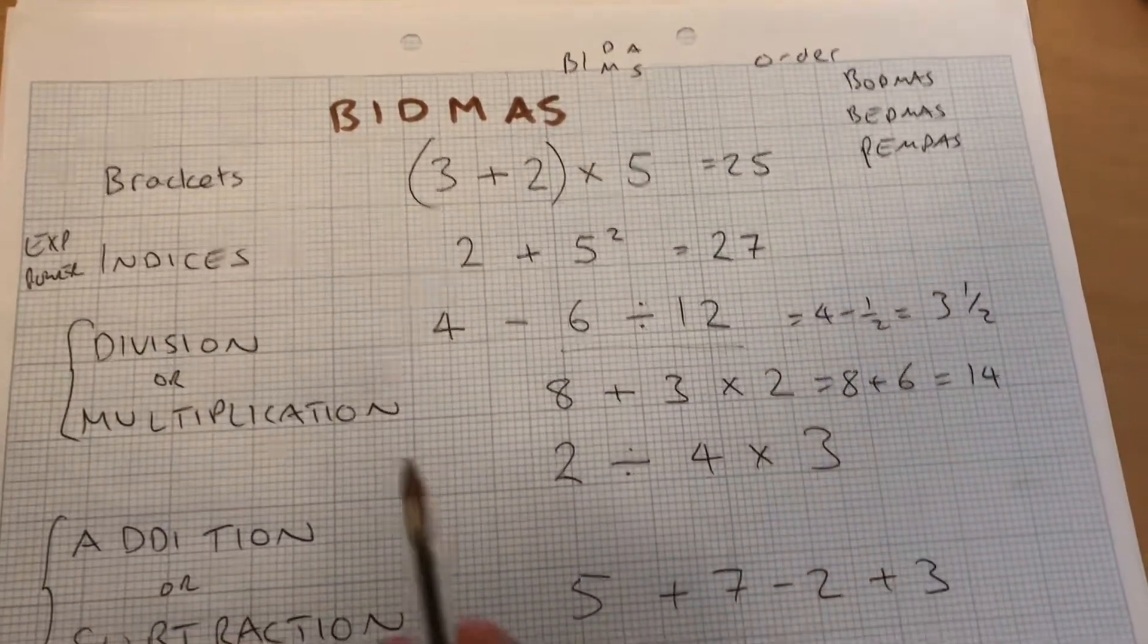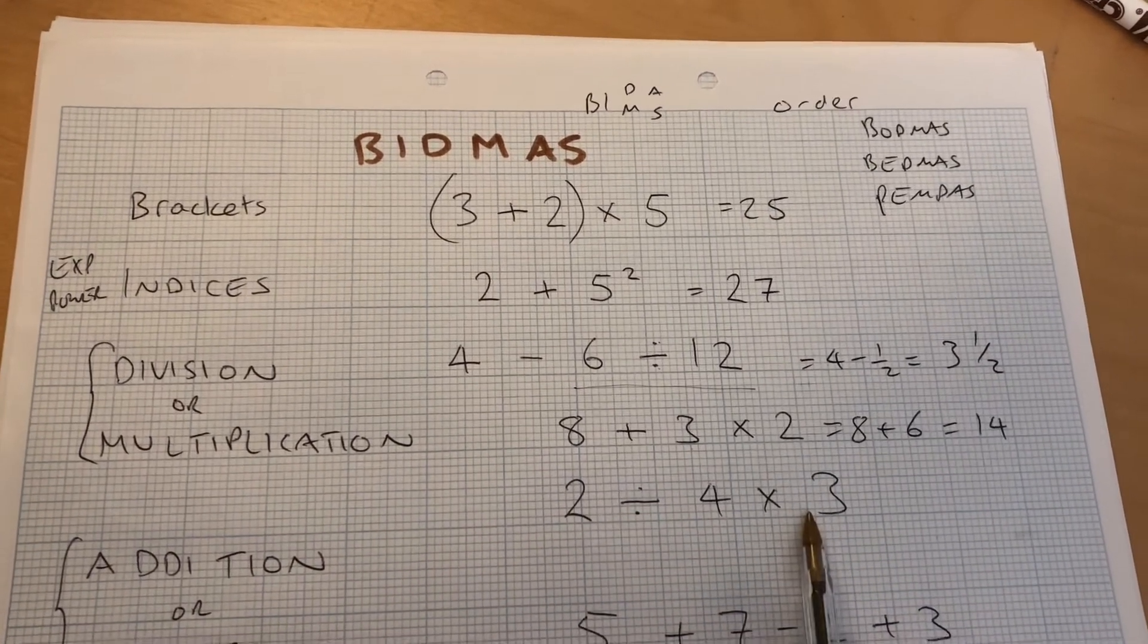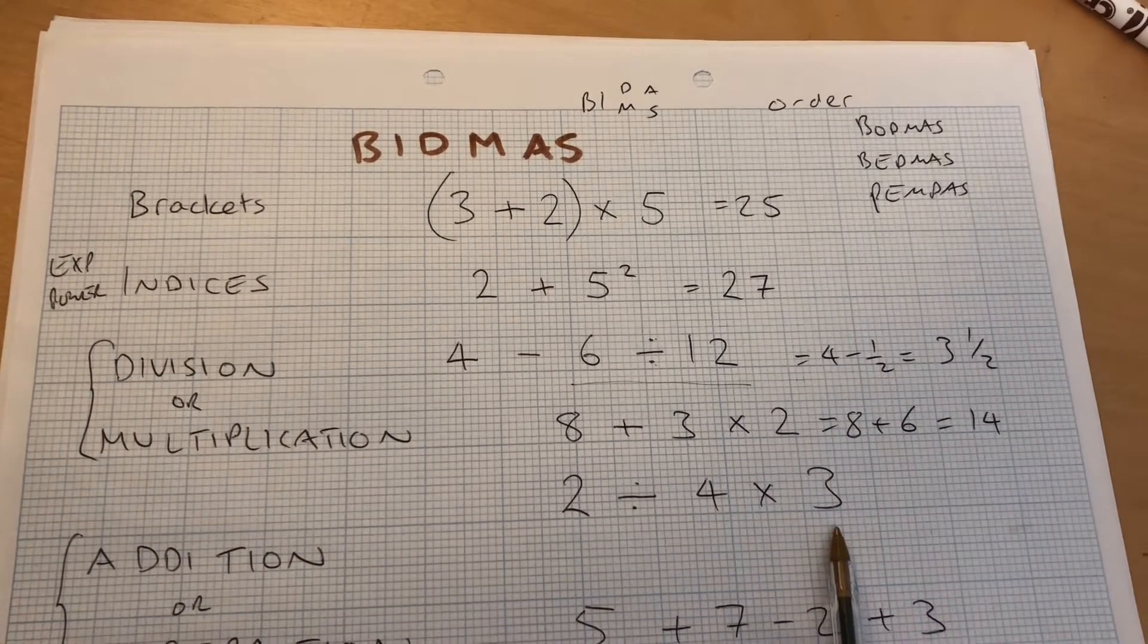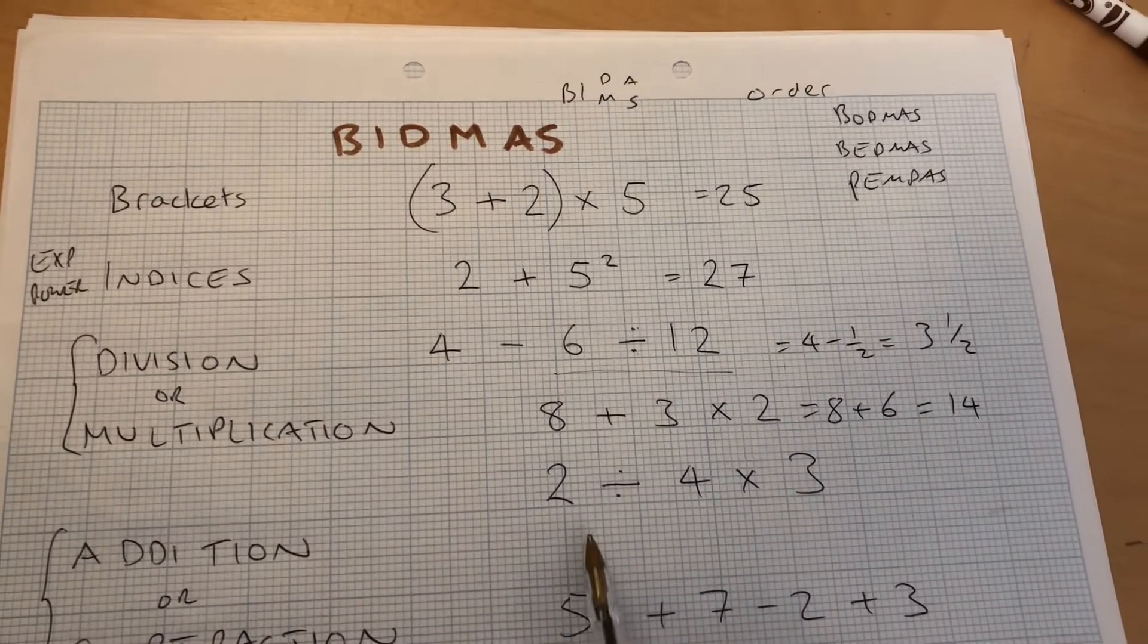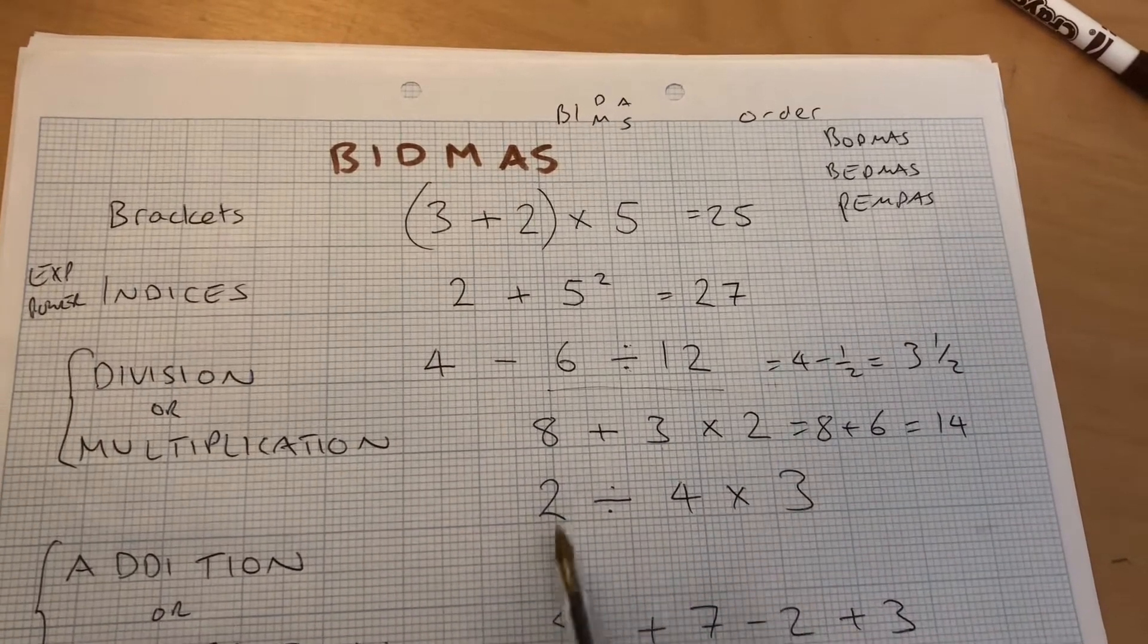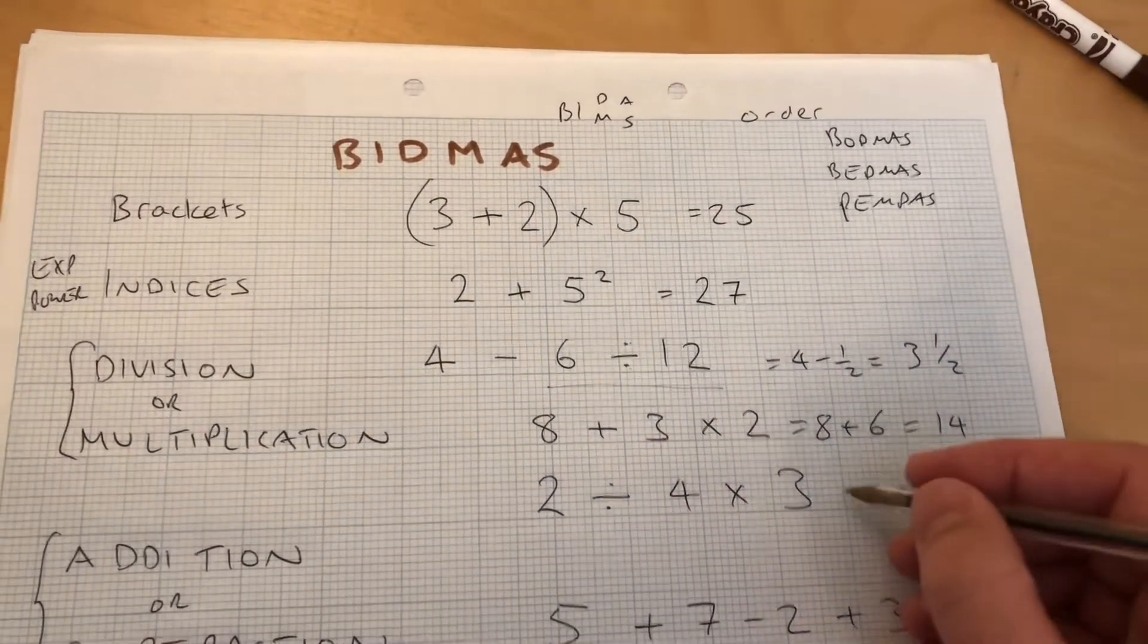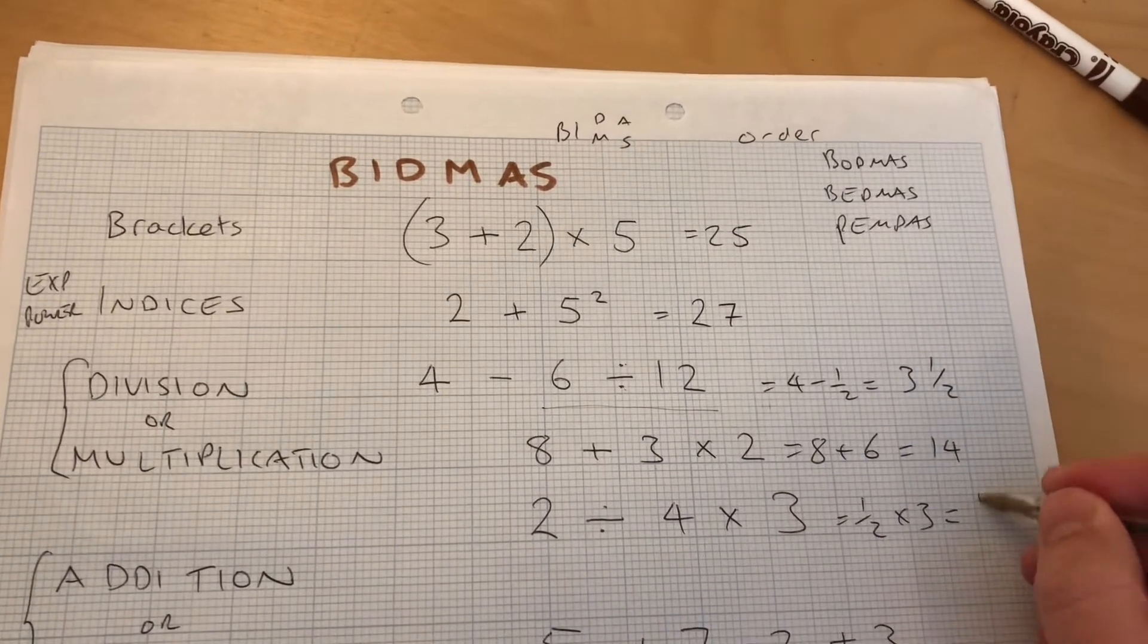And then what I was talking about earlier, division or multiplication. If they both happen at the same time, I just do left to right. So I don't worry about an order between the two of them. They have the same kind of importance. So I don't multiply first and then divide. I just do it in the order. 2 divided by 4, which is a half, and that times by 3, which will give me 1.5.